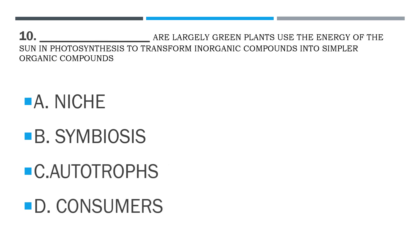Number 10. Blank: largely green plants that use the energy of the sun in photosynthesis to transform inorganic compounds into simpler organic compounds. A. Niche. B. Symbiosis. C. Autotrophs. D. Consumers.